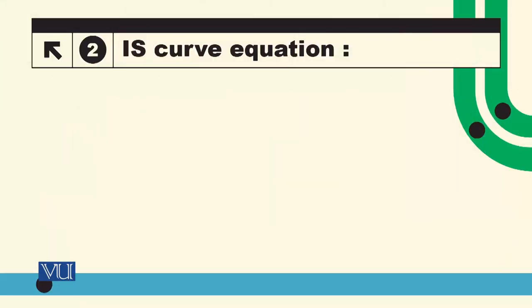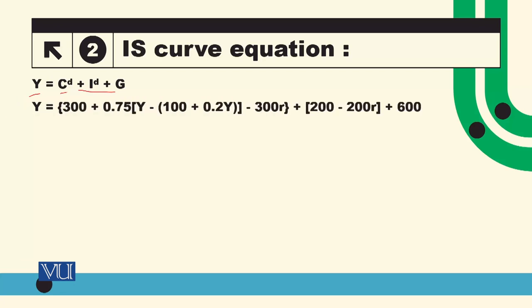So first we have IS curve equation. IS curve is goods market equilibrium. Goods market demand and supply: Y is the supply in the goods market and right-hand side you have total demand in goods market. There are three components: desired consumption, desired investment, and government spending.